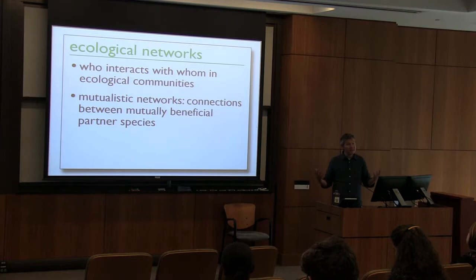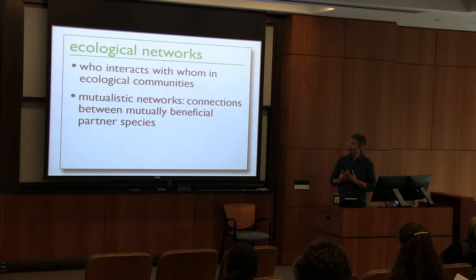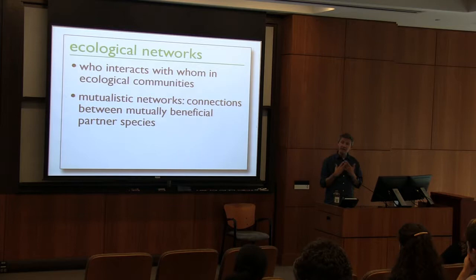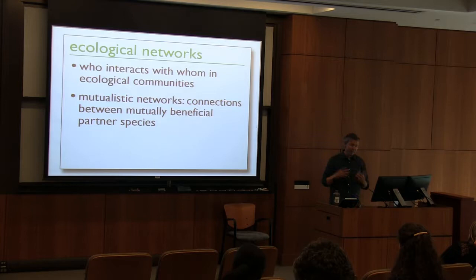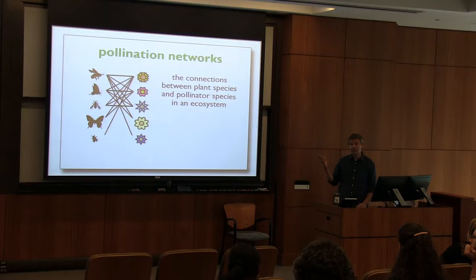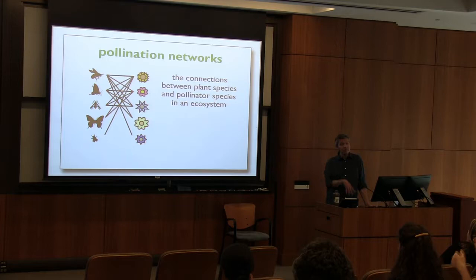I'll jump into the area I really want to focus on today: ecological networks. The idea is that we can look at a biological community of many different species and figure out who is interacting with whom — trace those connections and linkages. We are particularly interested in mutualistic networks, which are networks of species that benefit one another. Pollination is a key example. We can also look at plants and seed-dispersing animals, or fish and cleaner fish. In my lab, we're very focused on pollination networks — the connections between plant species and pollinator species in an ecosystem.